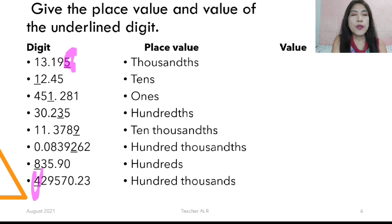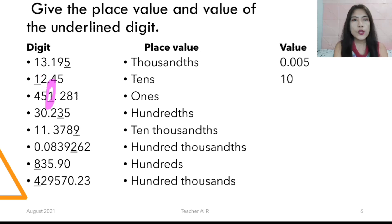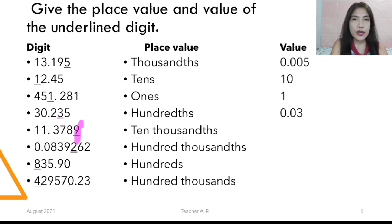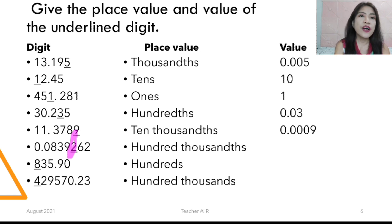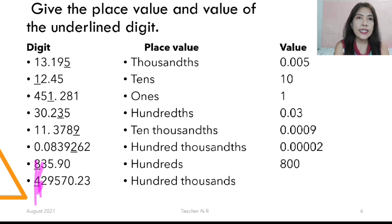Now for the values: the value of 5 is 0.005. The place value is tens and the value is 10. The encircled number's place value is ones and the value is 1. The next encircled number is 3 — the place value is hundredths and the value is 0.03. The encircled number 9 has a place value of ten-thousandths and the value is 0.0009. The encircled number 2 has a place value of hundred-thousandths and the value is 0.00002. The number 8 has a place value of hundreds and the value is 800. The number 4 has a place value of hundred-thousands and the value is 400,000.